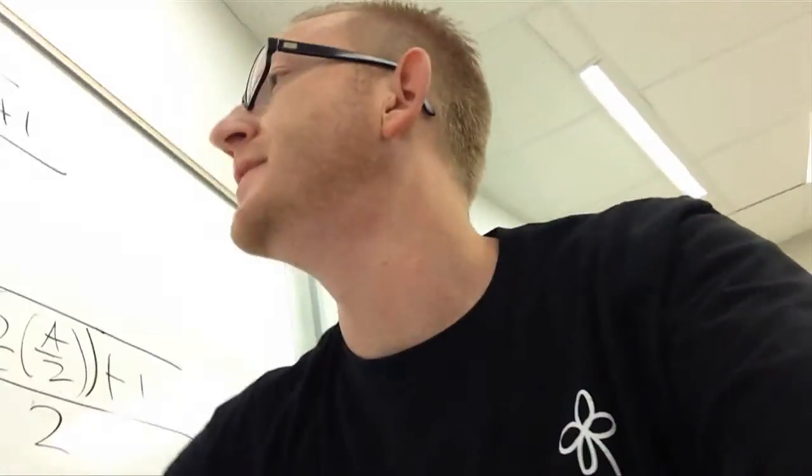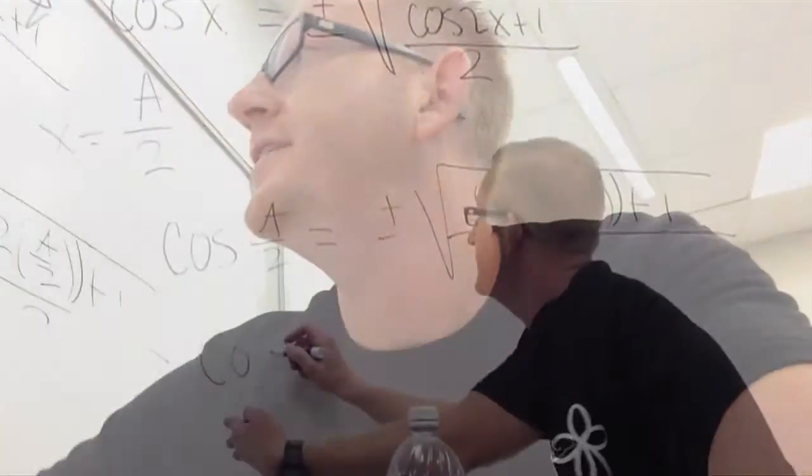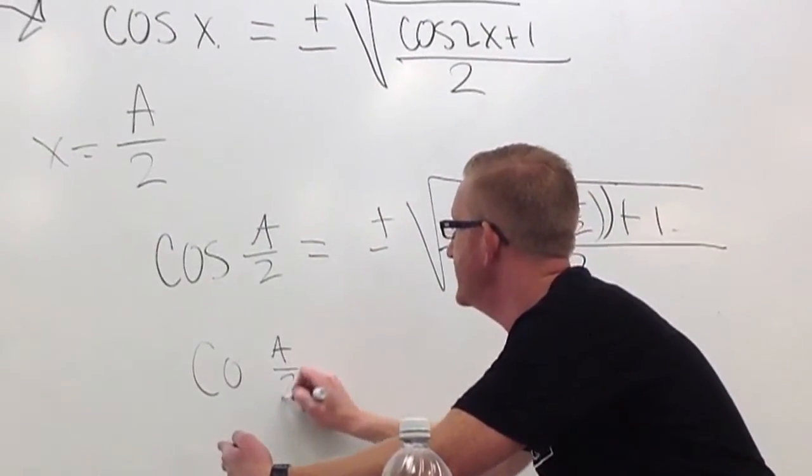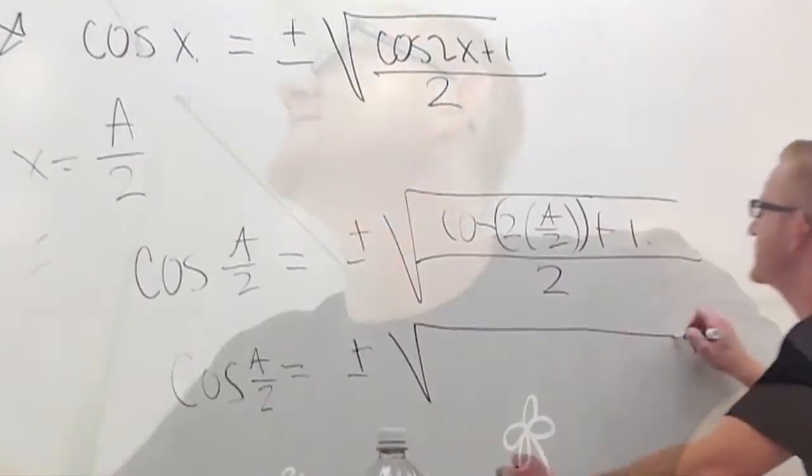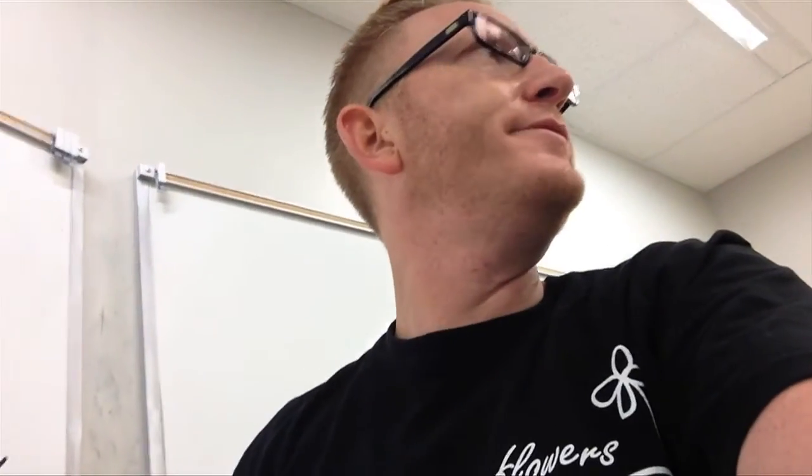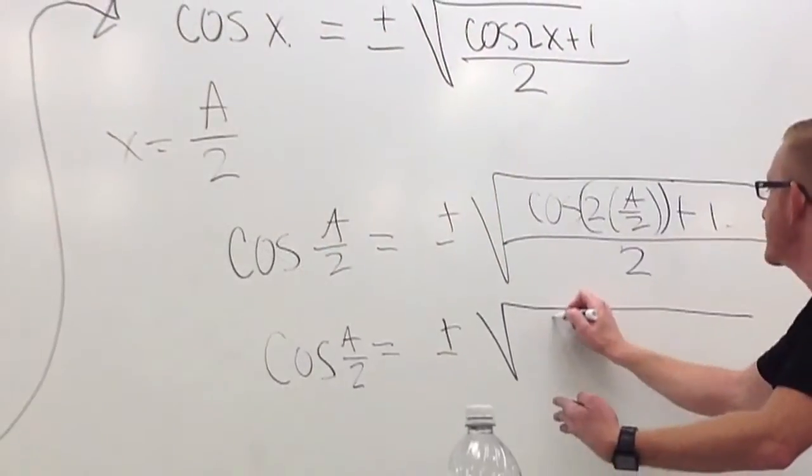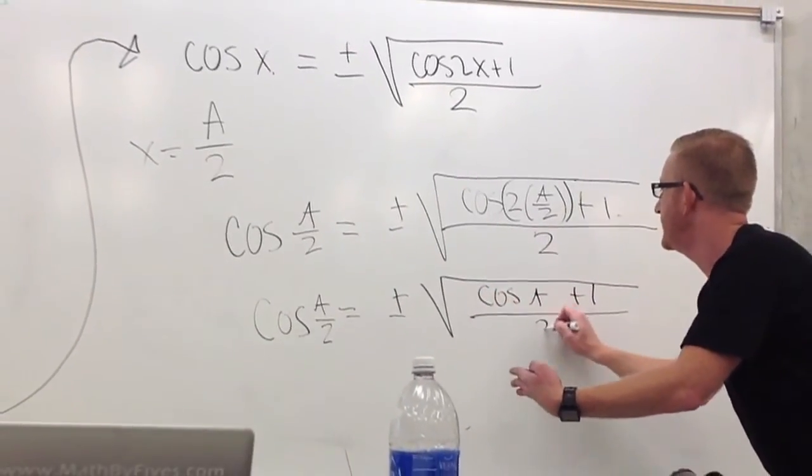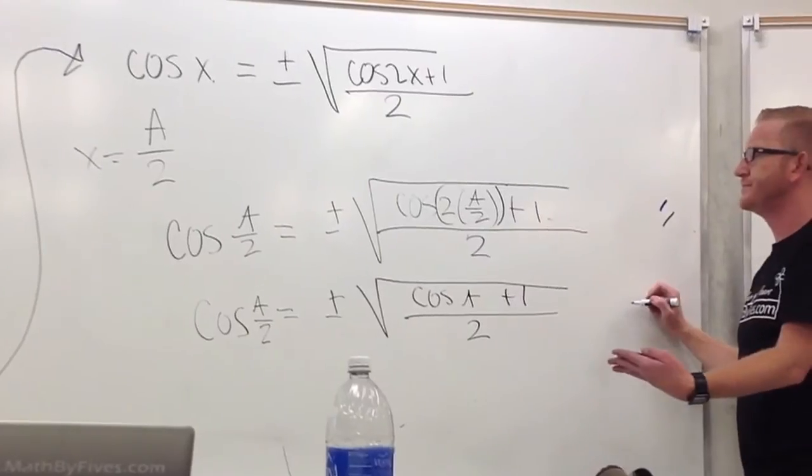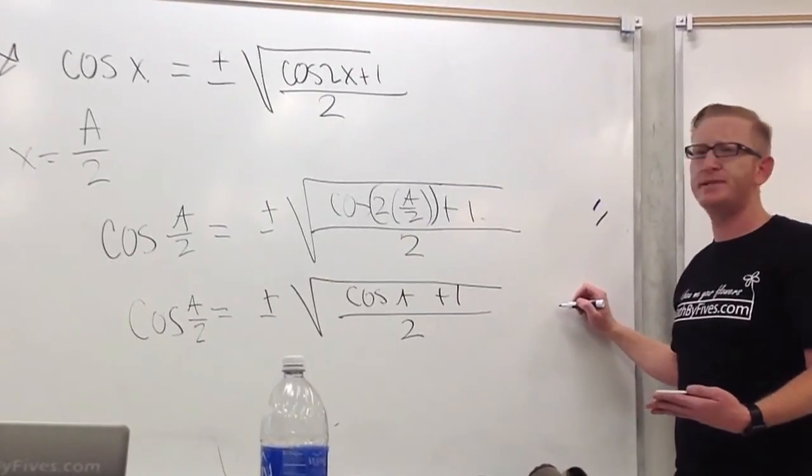We're almost done. So the cosine of a over 2, that's going to be plus and minus the square root. Now I have 2a over 2, which is just a. Okay! So that's the cosine of a plus 1 all over 2. And there you go. It has been shown.